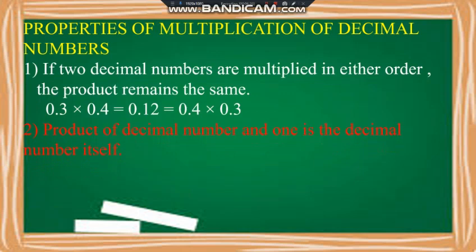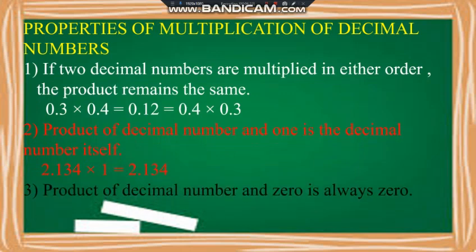If you multiply any decimal number by one, we get the decimal number itself. And if you multiply by zero, the product will be zero. These properties are similar to multiplication of simple numbers — natural numbers and whole numbers.